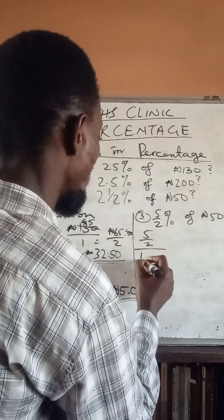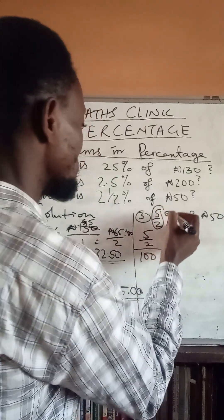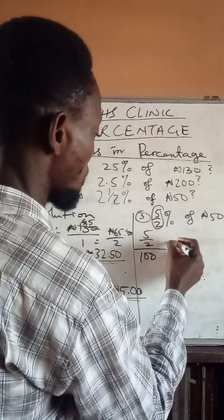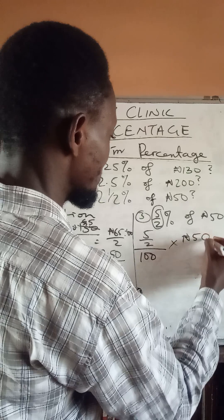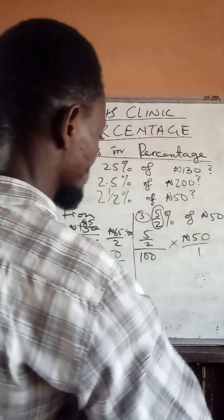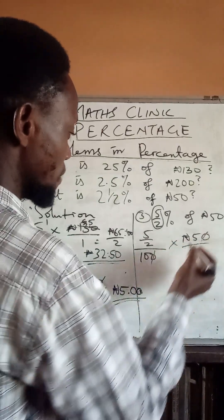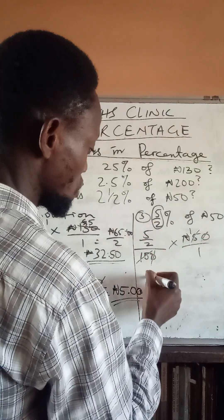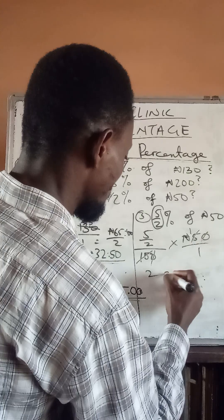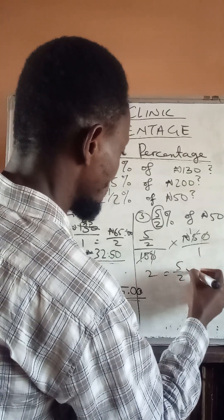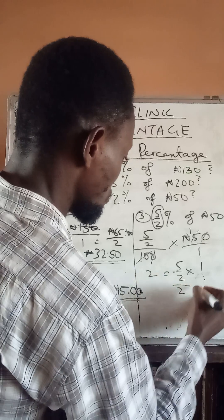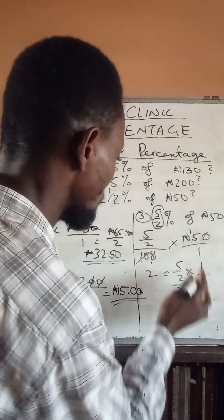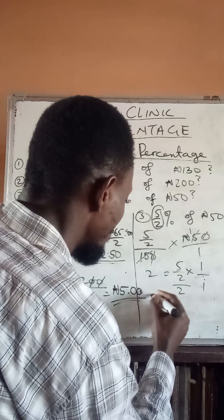5 over 2 percent is the same as 5 over 2, all over 100 — because this number carries the percentage sign, it goes over 100. So we have 5 over 2, all over 100, times 50 naira over 1. We can cross zeros: this zero divides that zero, and 5 can divide 50 — 5 into 50 gives 10, and 5 into 5 gives 1, and 5 into 10 gives 2. We have 5 over 2, times 1 over 2.